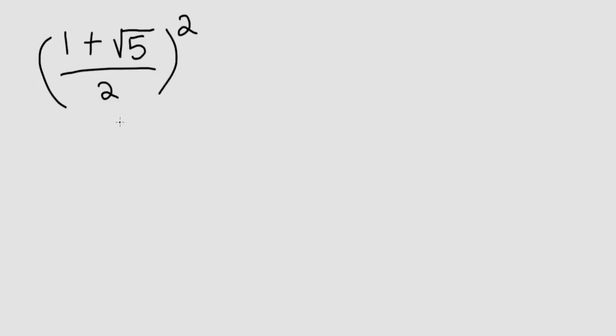Here we need to simplify. I'll start off by squaring the numerator and the denominator. So this becomes 1 plus square root of 5 all squared over 2 squared.